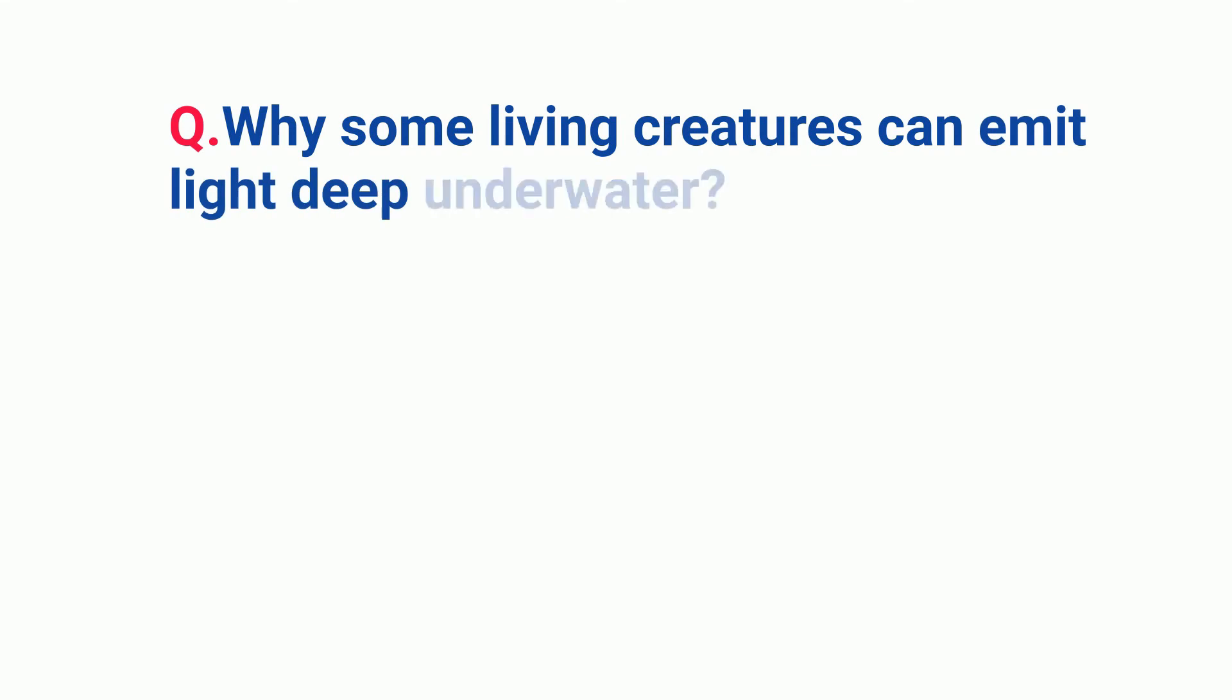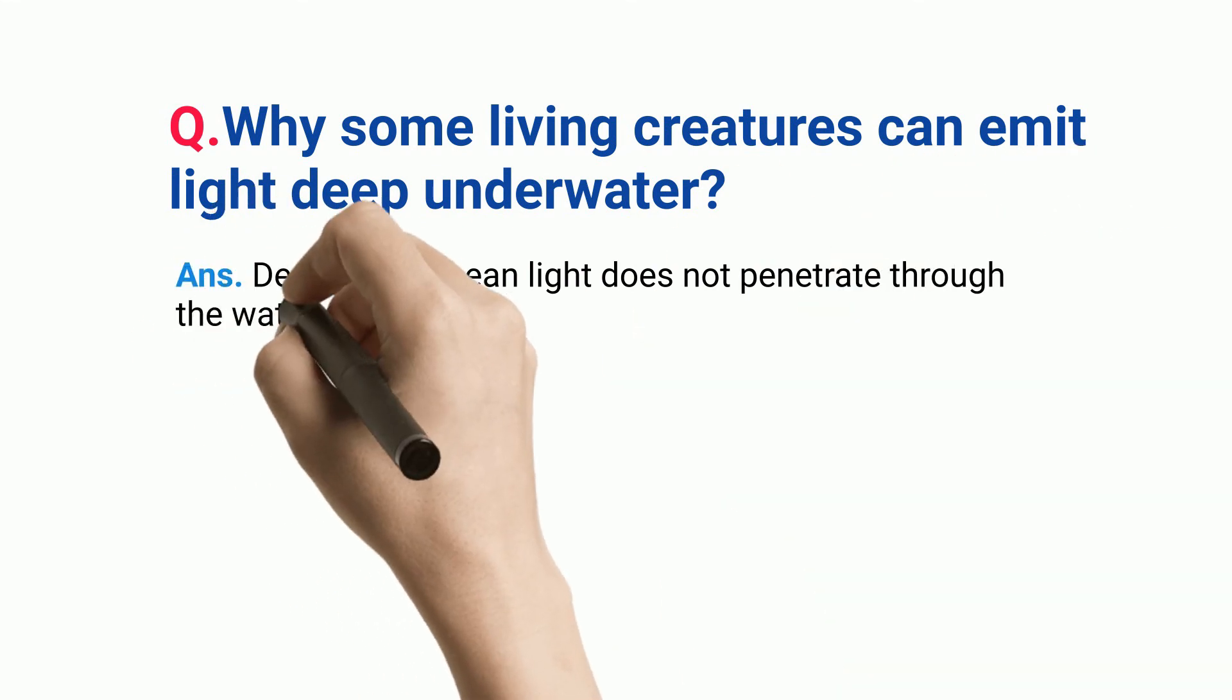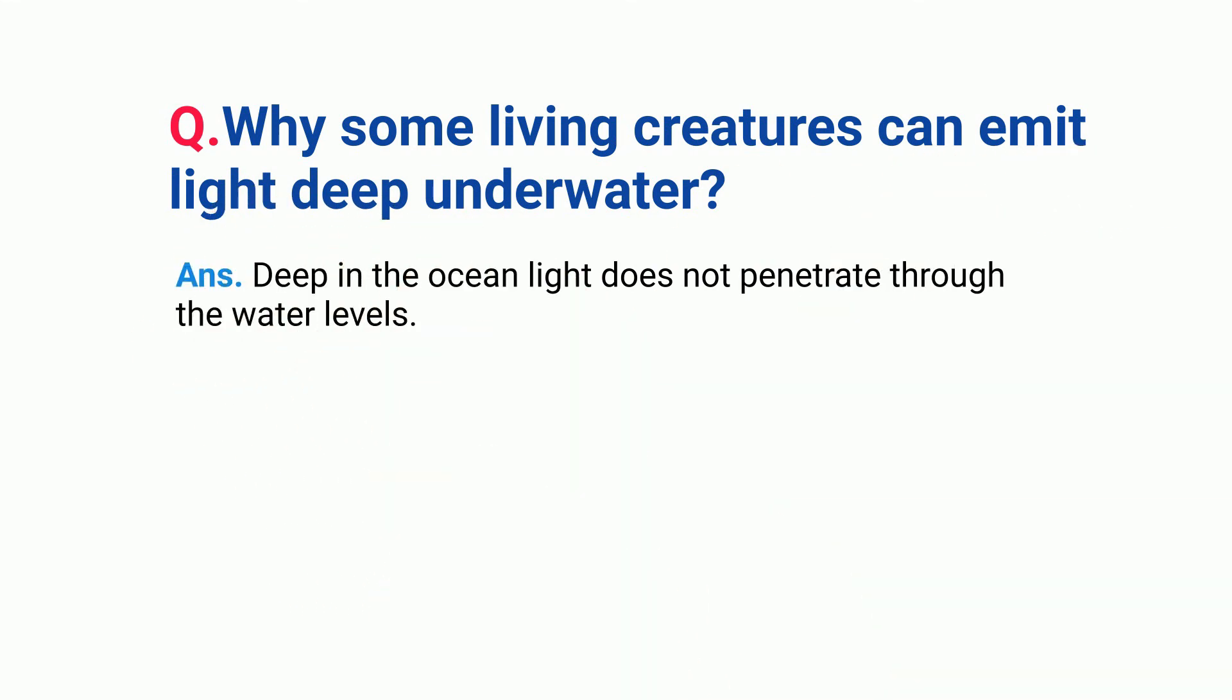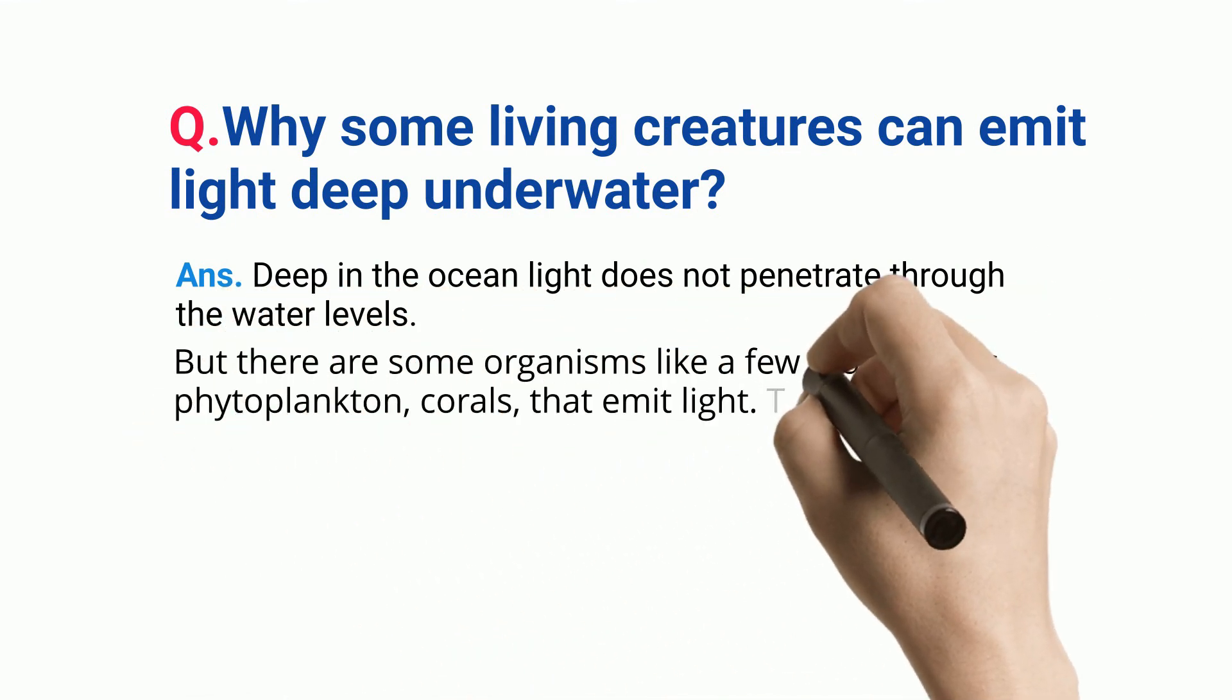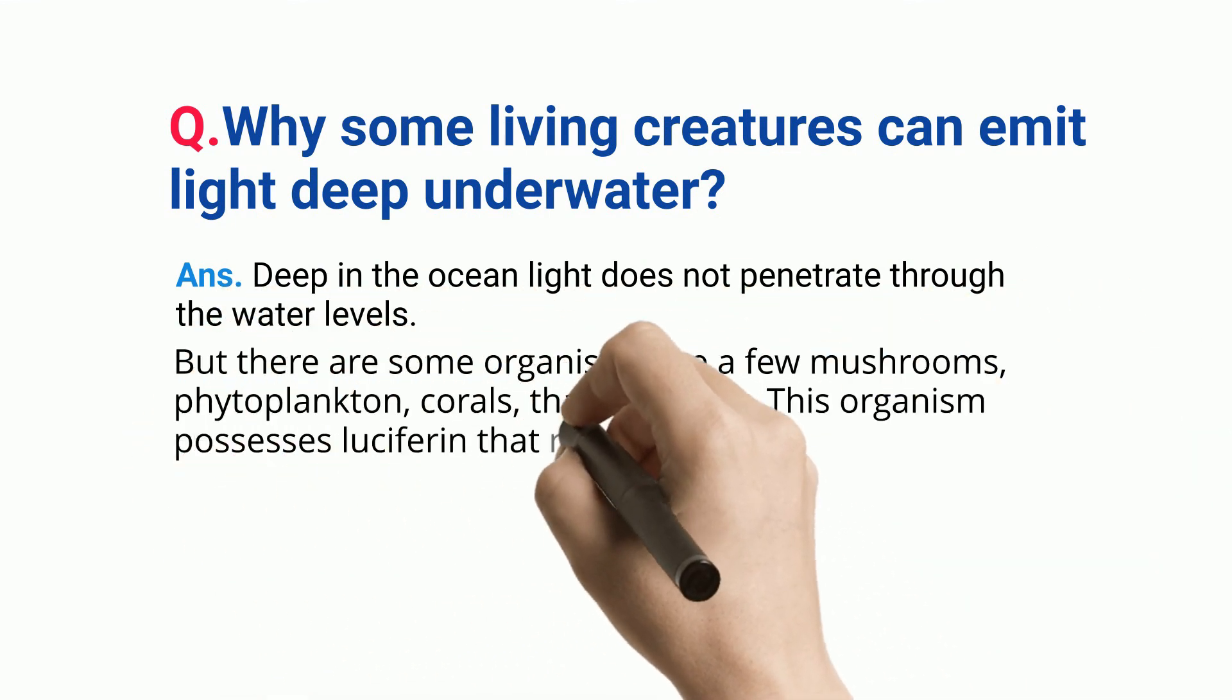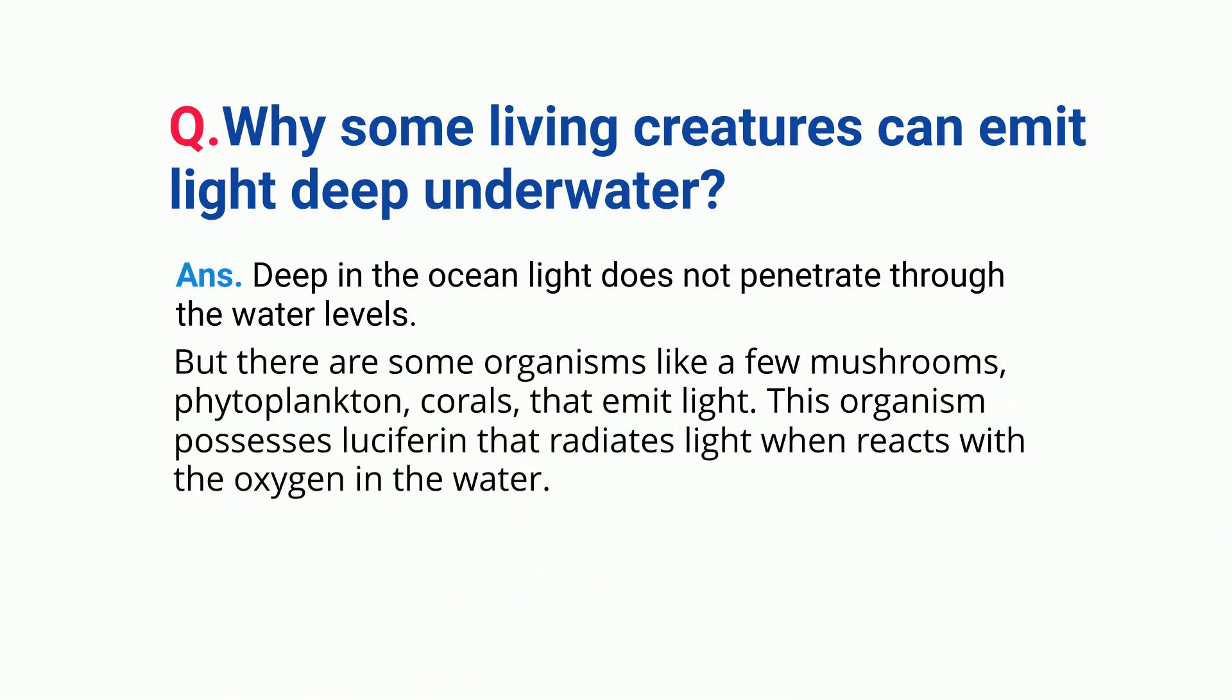Why some living creatures can emit light deep underwater? Deep in the ocean, light does not penetrate through the water levels. But there are some organisms like a few mushrooms, phytoplankton, corals, that emit light. This organism possesses luciferin that radiates light when it reacts with the oxygen in the water.